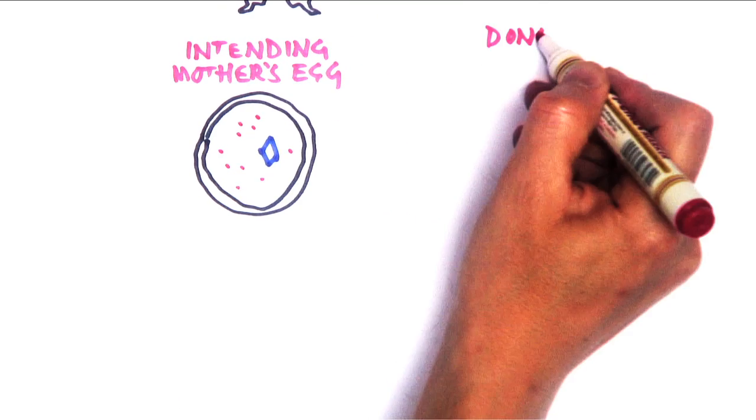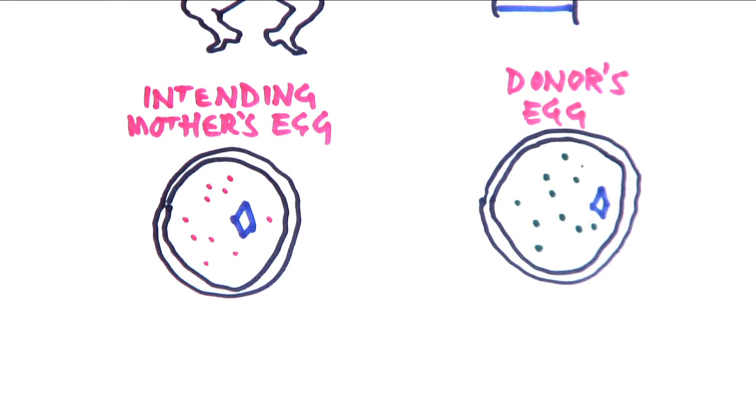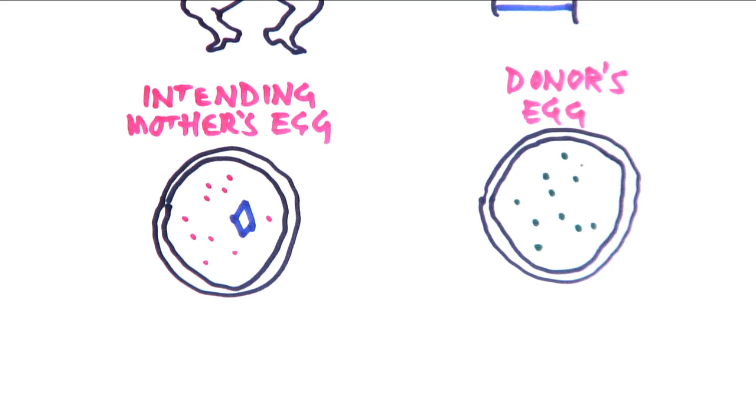In this technique, you remove the spindle from the donor egg and replace it with the spindle from the intending mother's egg.